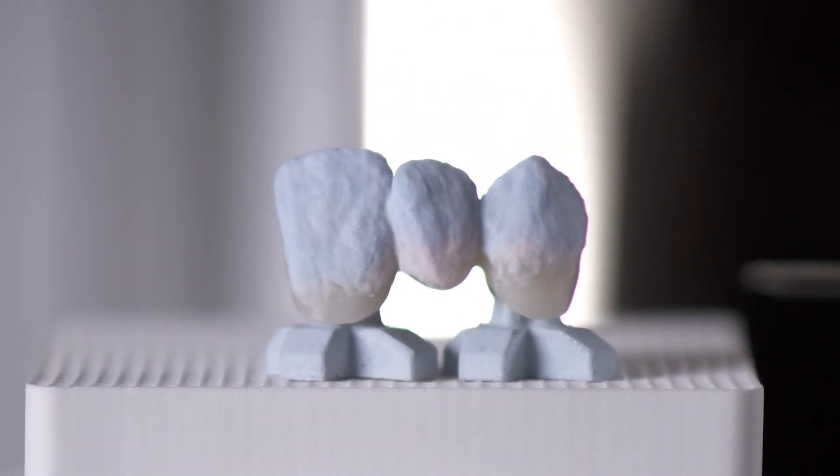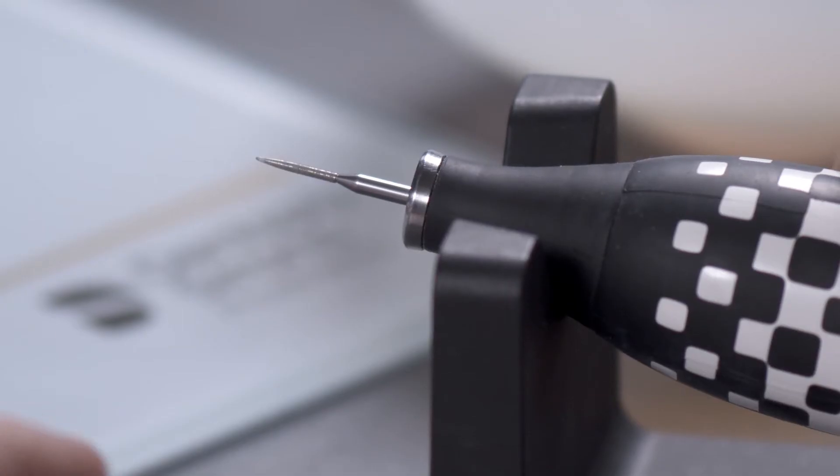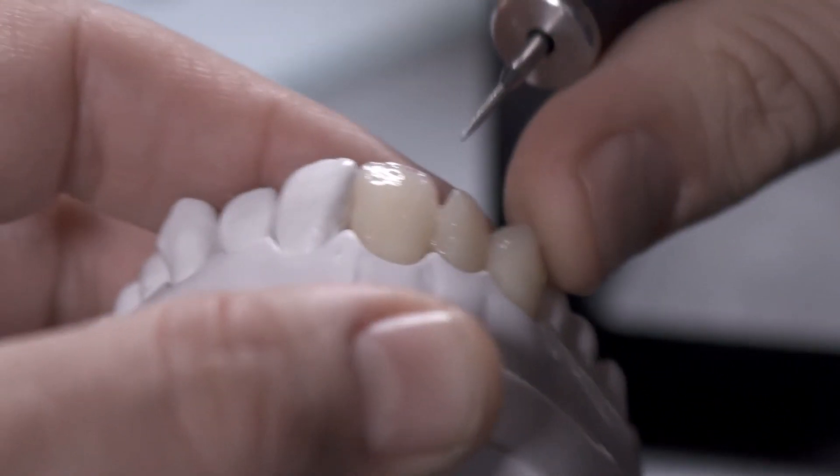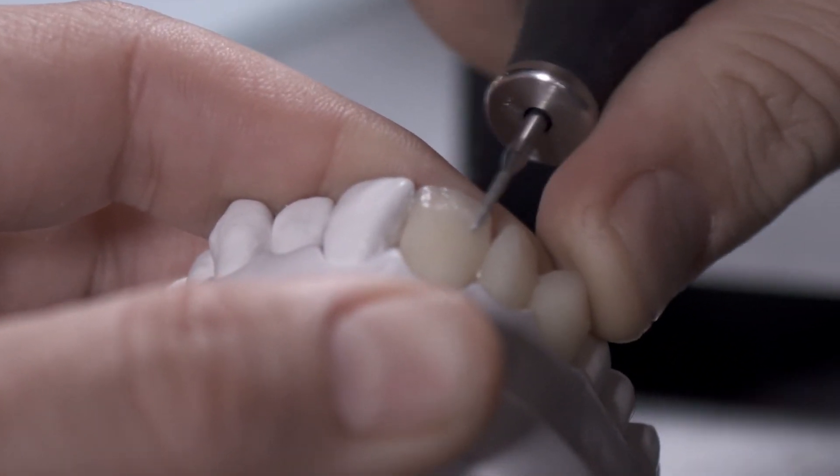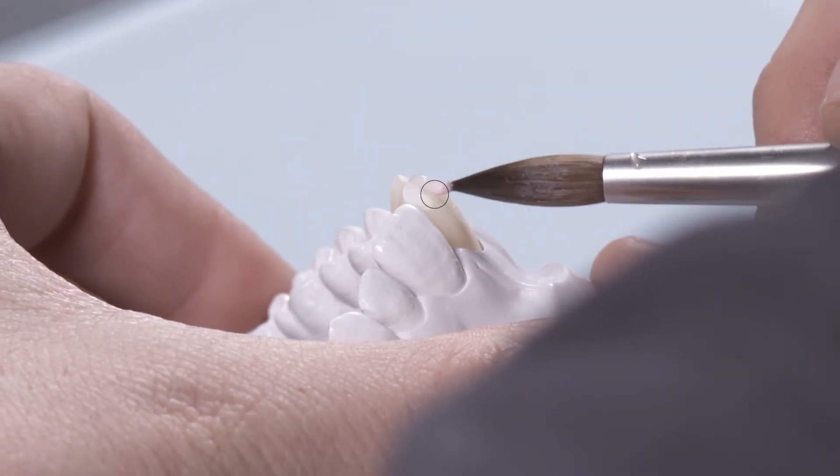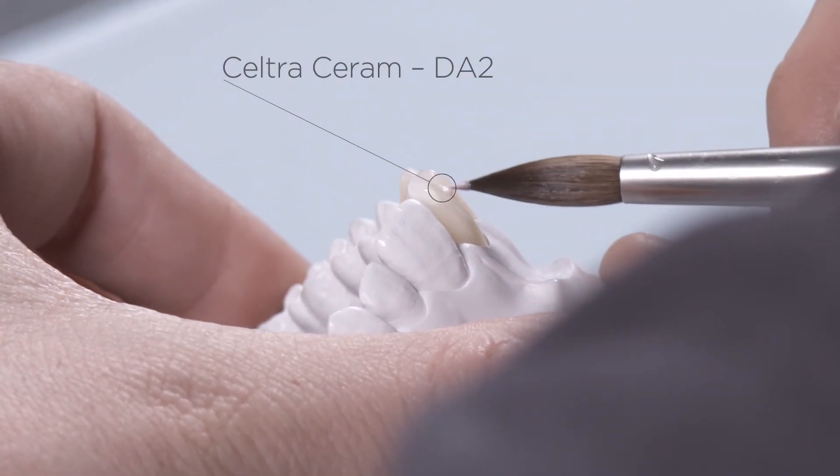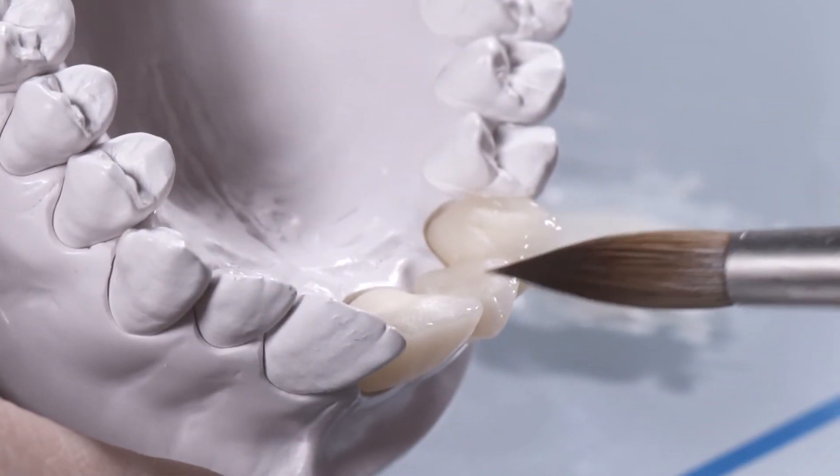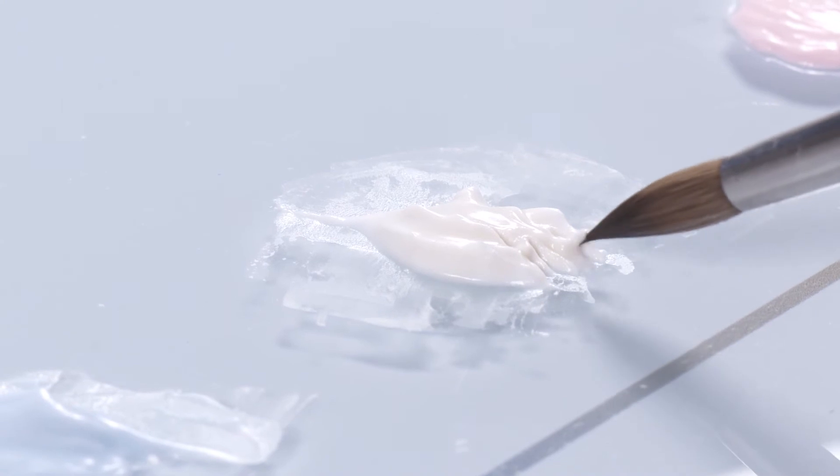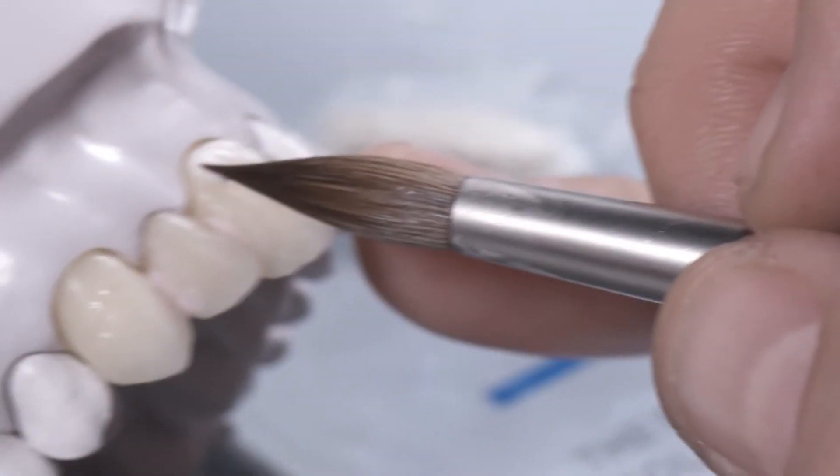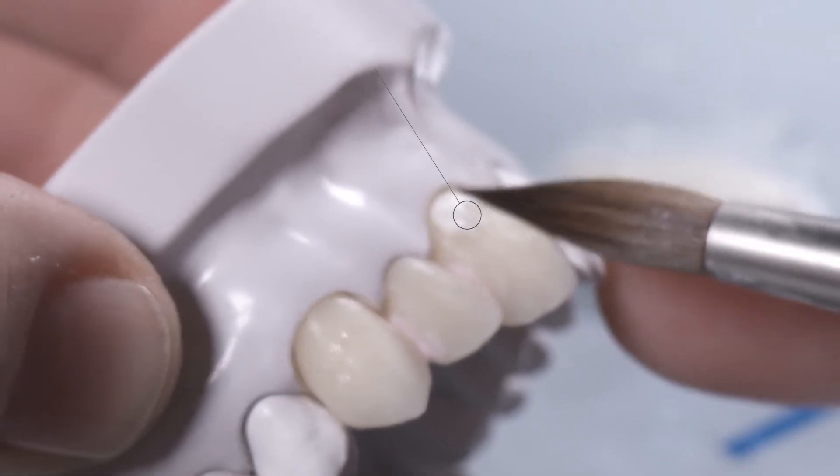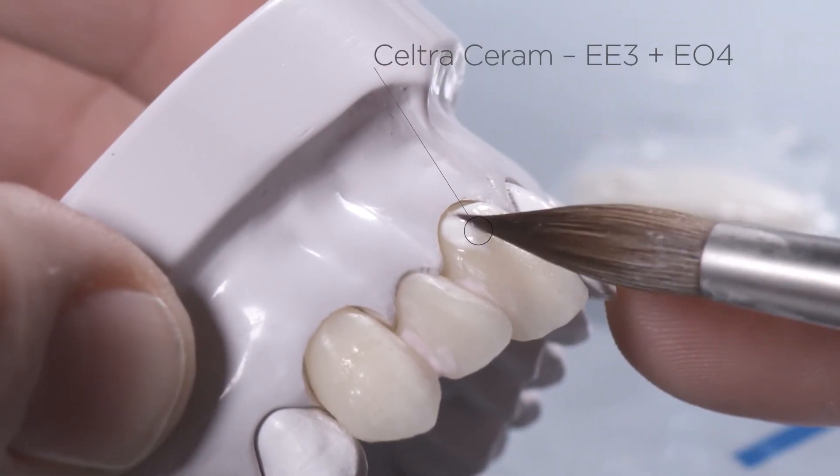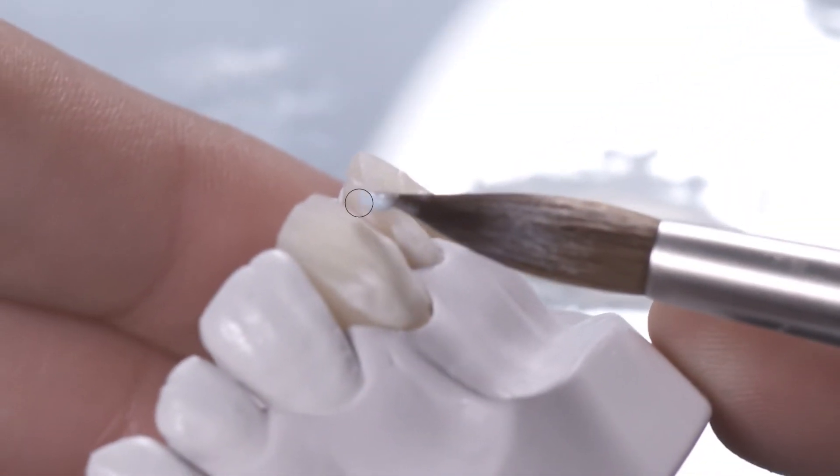After the ceramic firing, finish the shape and prepare the restoration for the second layer. Close the interdental spaces both labially and palatally with Dentin A2. On the cervical aspect, we use a mixture of Enamel Effect EE3 and Enamel Opal EO4.